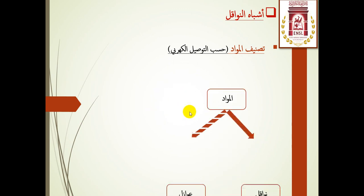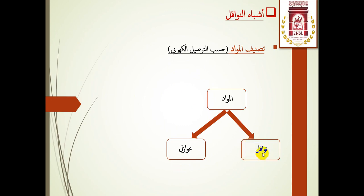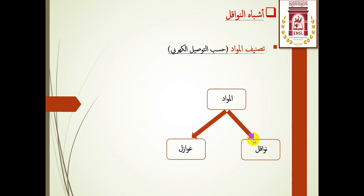كمقدمة، المواد من حيث الناقلية الكهربائية تنقسم إلى قسمين رئيسيين: مواد ناقلة للتيار الكهربائي مثل المعادن أو الفلزات بصفة عامة، وأخرى عازلة مثل المواد البلاستيكية والزجاج والخزافيات وغيرها. ناقلية العوازل تكون ضعيفة جدا أو شبه منعدمة، وذلك يرجع لعدد الإلكترونات الحرة؛ إذ يوجد حوالي 10^22 إلكترون حر في 1 سنتيمتر مكعب في النواقل، بينما في العوازل لا يتجاوز 10 إلكترونات حرة في 1 سنتيمتر مكعب.